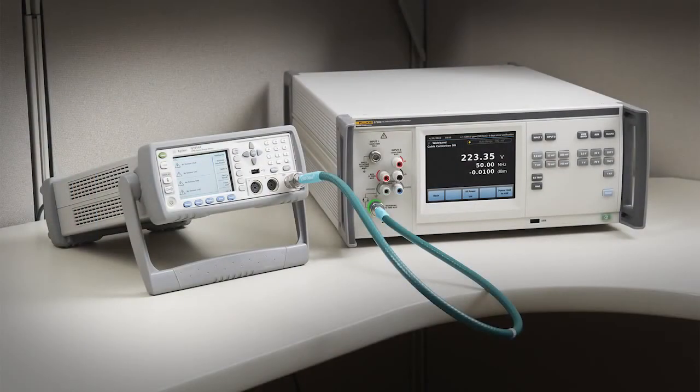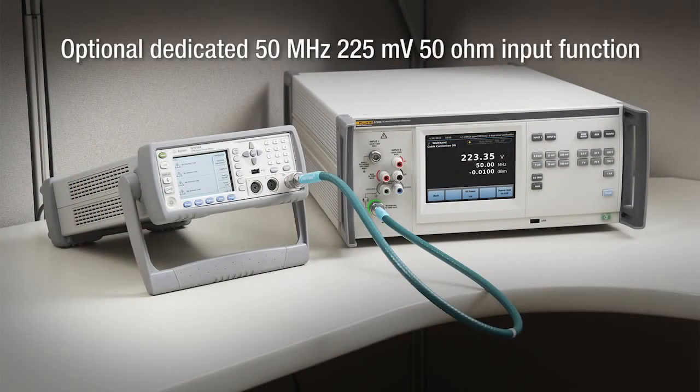A dedicated special purpose 50MHz, 225mV, 50 ohm input function is available as an option for measuring RF power. The option is spot-calibrated at the end of a precision level or phase-stable metrology grade cable. It calculates the measured power with 50 ohm load.